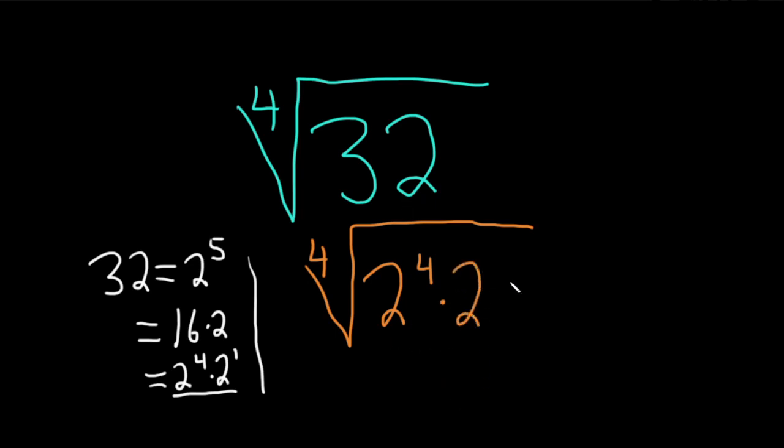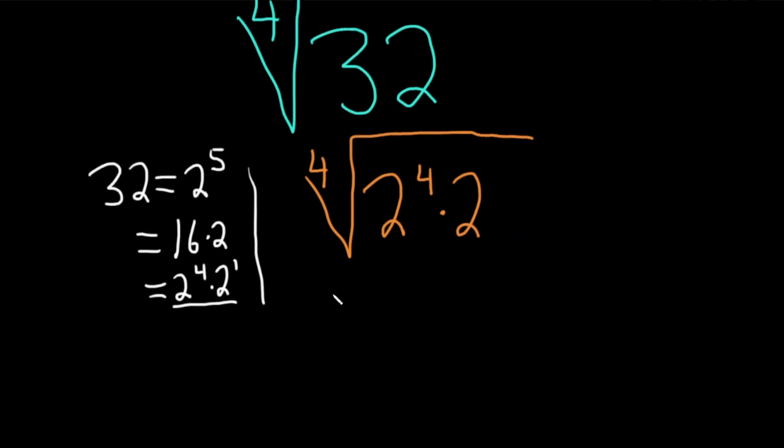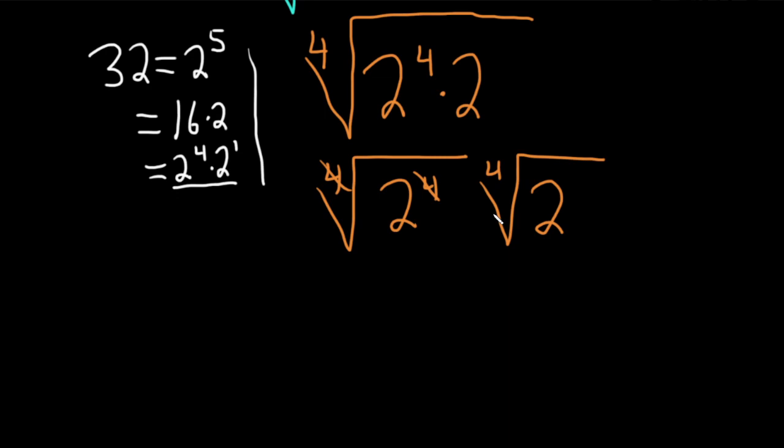Okay, so now we can basically take the fourth root of each factor. So this is the fourth root of 2 to the fourth times the fourth root of 2. And whenever this exponent matches this index, it cancels. So this is going to be 2 times the fourth root of 2.